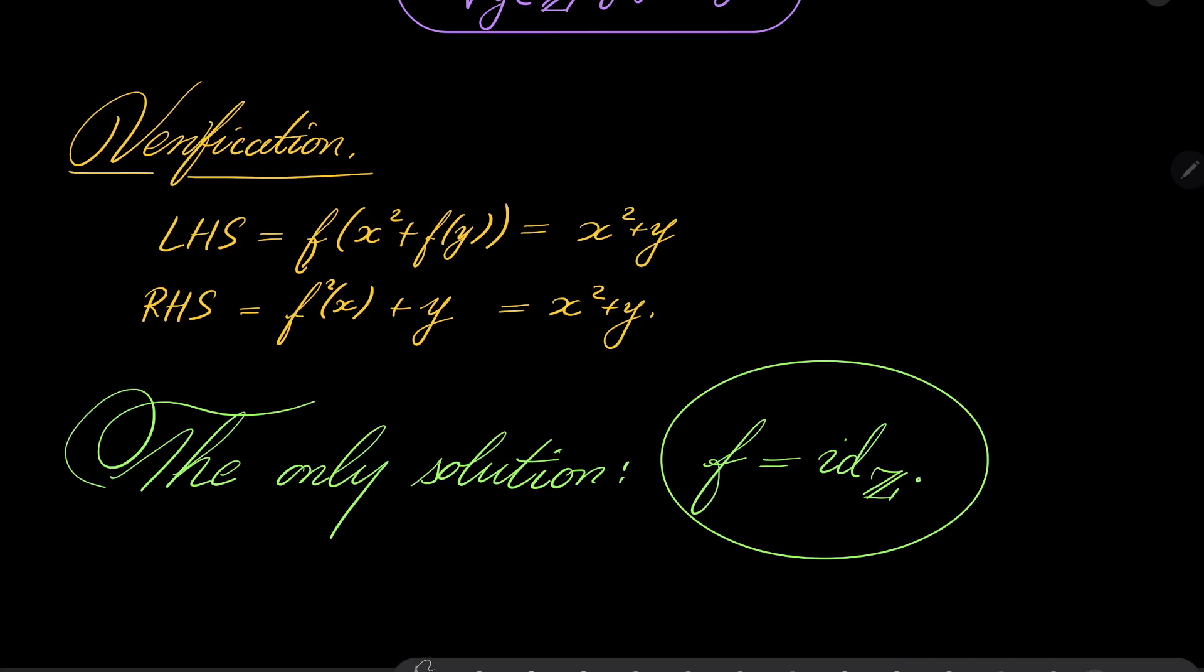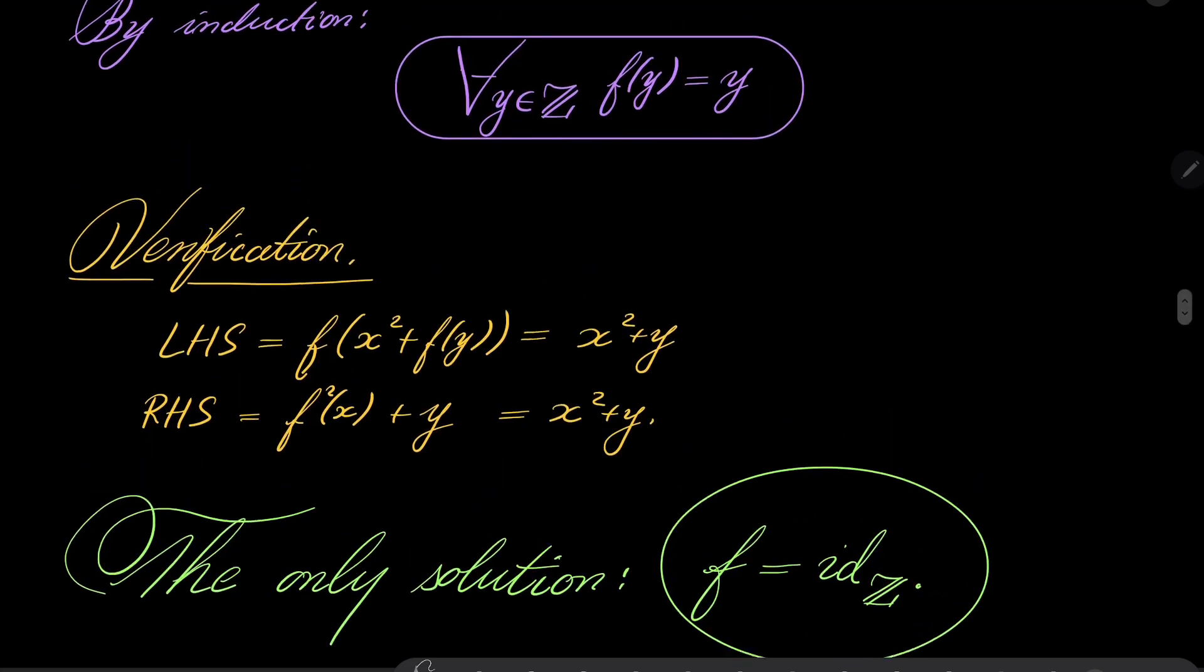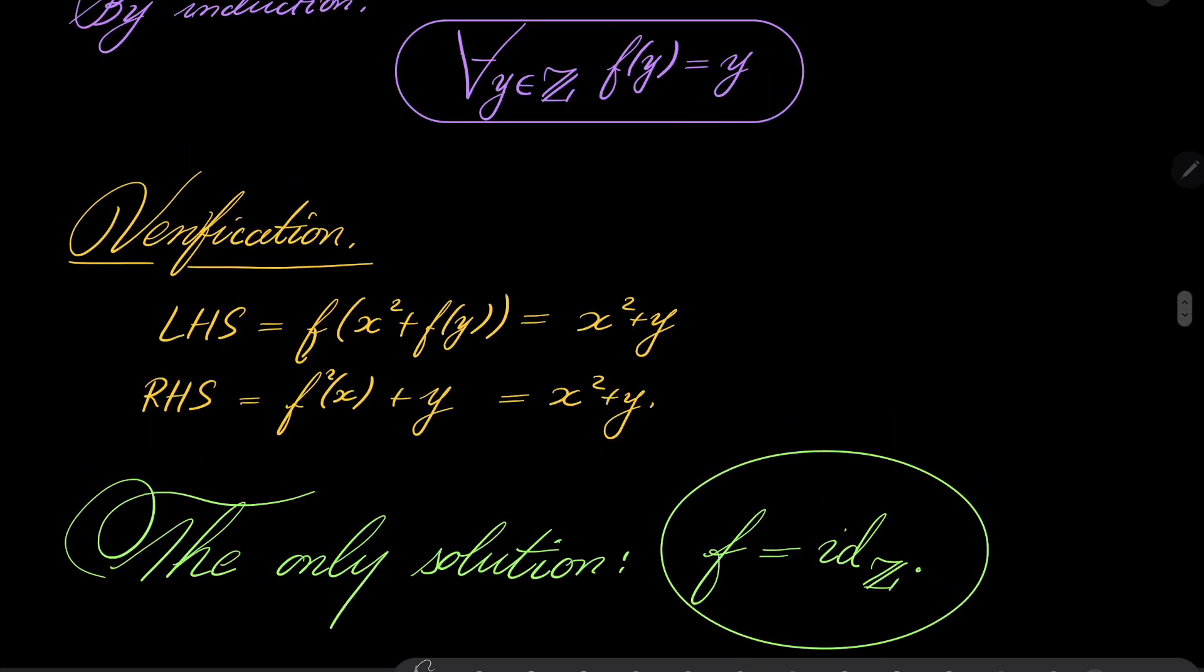So pretty nice problem I'd say. By the way, in the original problem statement it was divided into three parts: in part a it was required to show that f of zero was zero, in part b that f of one is one, and for part c that f of y equals y. So the idea was to have a and b lead to c but whatever.